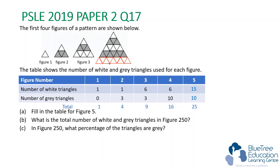What is so special about the numbers 1, 4, 9, 16, and 25? That's right — they are square numbers. So to find the total number of white and gray triangles in figure 250 is simply the square of 250, which is 62,500 triangles.